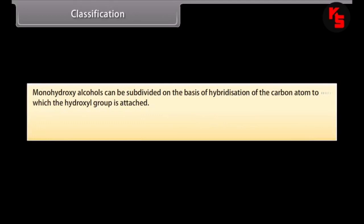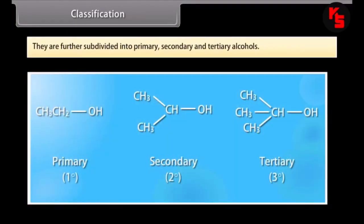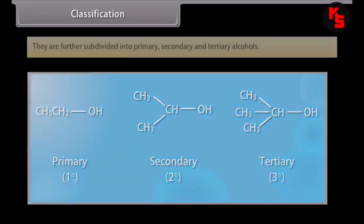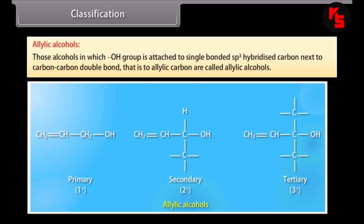Monohydroxy alcohols can be subdivided on the basis of hybridization of the carbon atom to which the hydroxyl group is attached. Compounds containing sp3 hybridized carbon bonded with a hydroxyl group are further subdivided into primary, secondary and tertiary alcohols. Allylic alcohols are those in which the hydroxyl group is attached to a single-bonded sp3 hybridized carbon next to a carbon-carbon double bond, that is, to an allylic carbon.